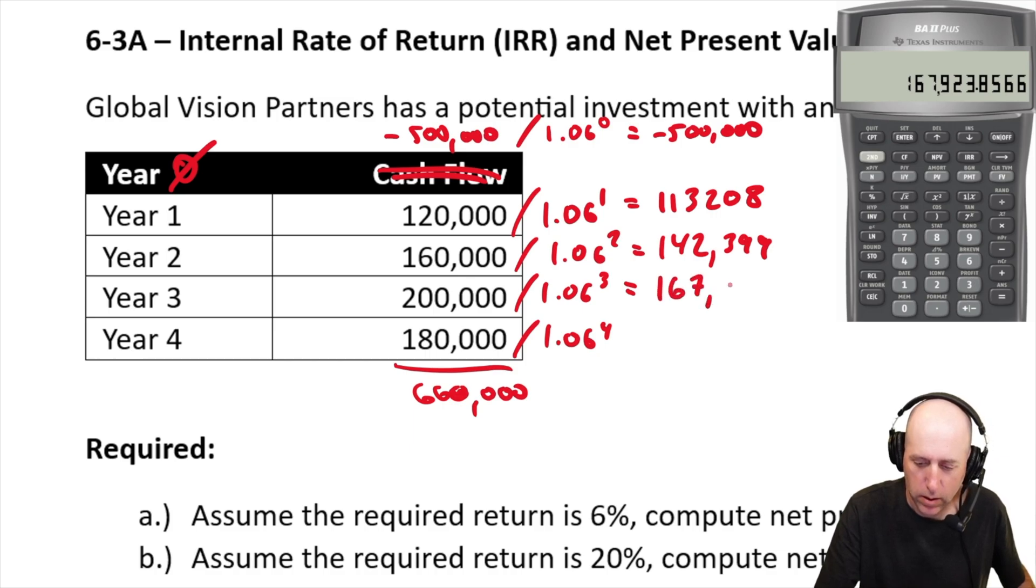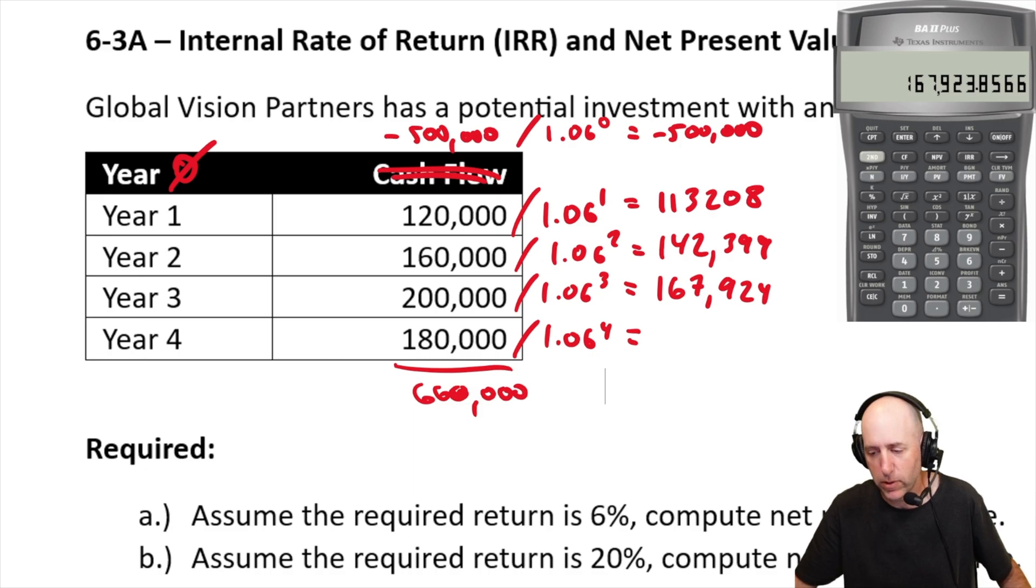And 180 divided by 1.06 to the power of 4, 1.06 to the power of 4, 1 over x times 180, 142,577.